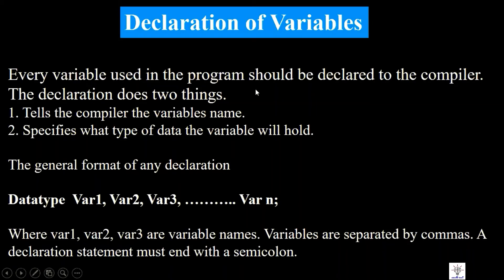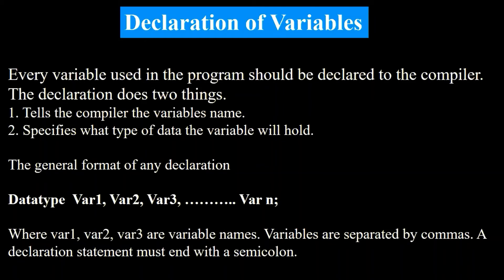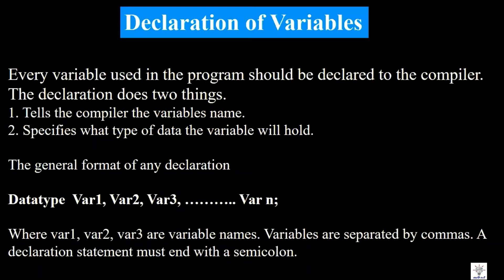Every variable used in a program should be declared to the compiler. A declaration does two things: it tells the compiler the variable name, and it specifies what type of data the variable will hold. In mathematics we have only one data type, but in programming language we have different data types, so you must mention the data type along with the variable name.